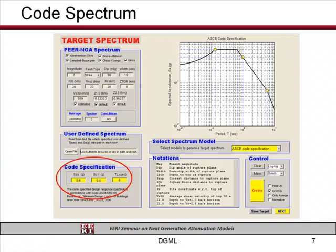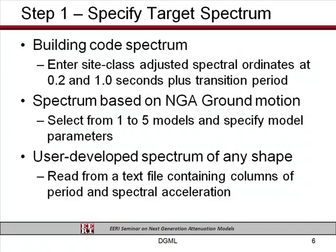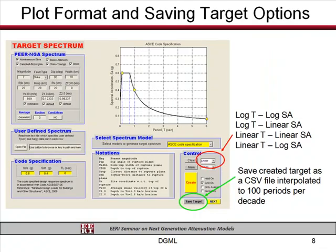The display is in log-log, which people working in ground motions like to use, but it has the capability of switching the plots to linear-linear, log-linear, or linear-log. So it has a graphic interface tool that allows you to plot in different ways to look at the response spectrum. You can also save the constructed response spectrum as an ASCII file output at 100 periods — it will do a linear interpolation to get a 100-period output.